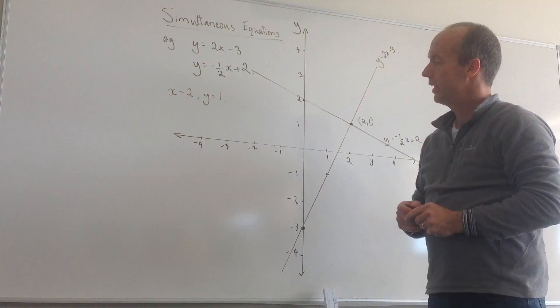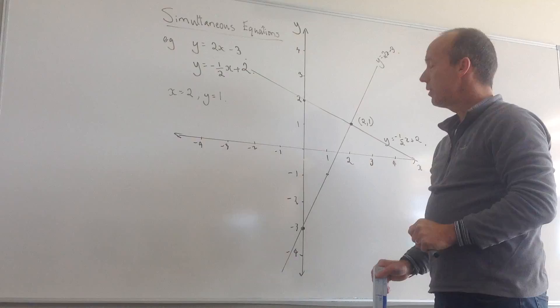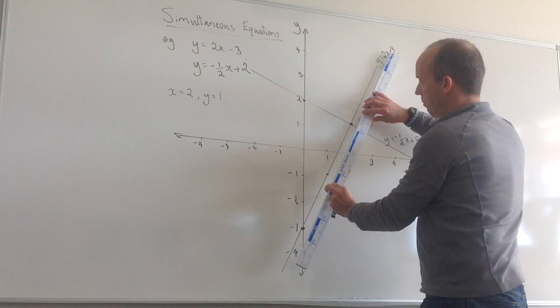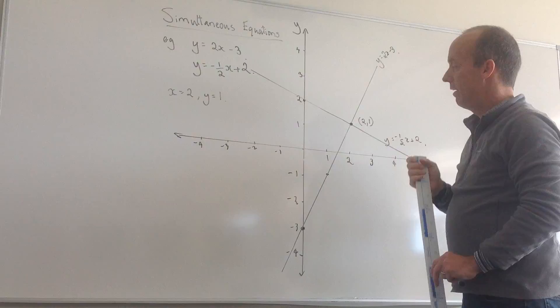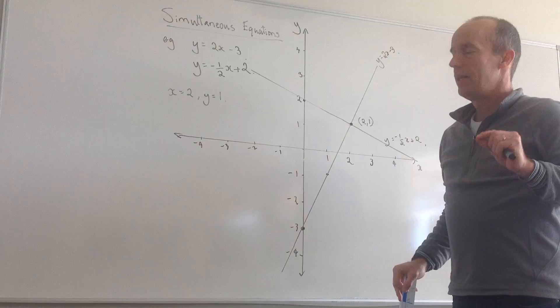There are a couple of special cases. If these lines ended up being parallel to each other, they would never cross. In that case, those simultaneous equations have no solutions. If the gradient's the same but the y-intercept's different, there's no solutions to that pair of simultaneous equations.